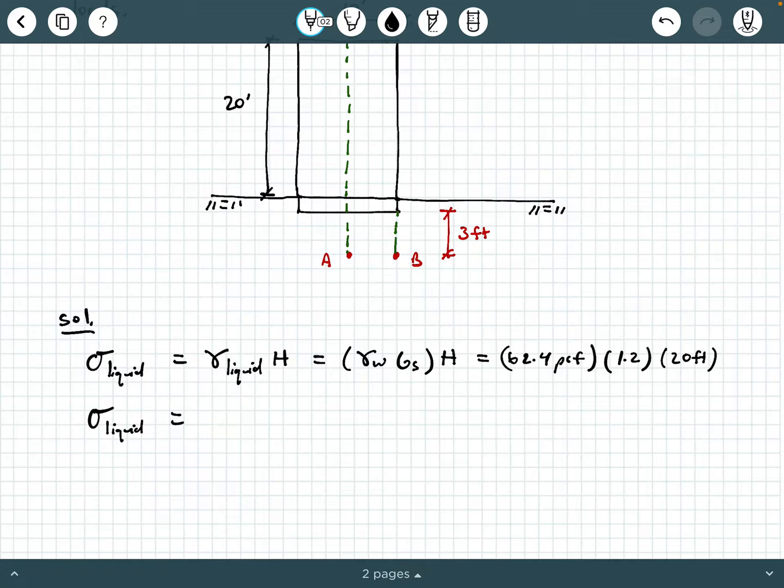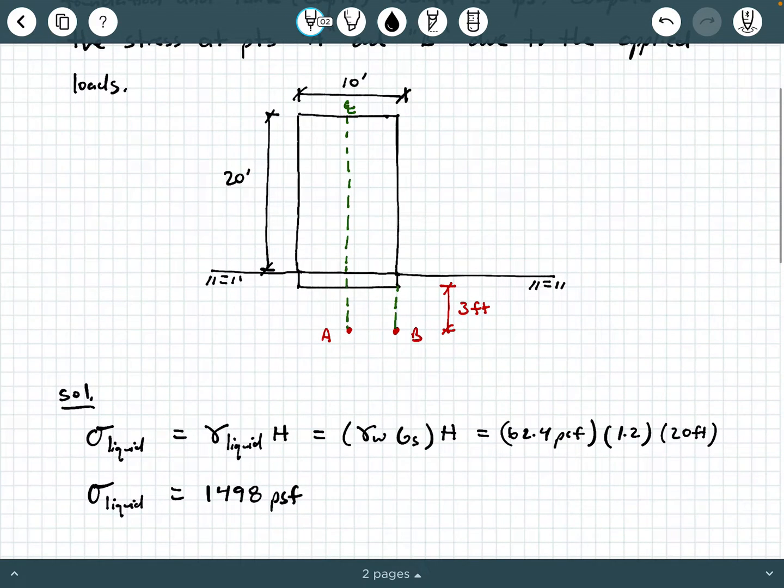I'm punching this in my TI-36X Pro calculator. That is 1,498 PSF. Now how is this acting? Well it really is an all-around hydrostatic pressure, but what we're really interested in is it acting at the base of the tank right here. So that's the 1,498 PSF.